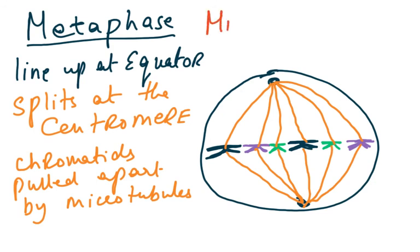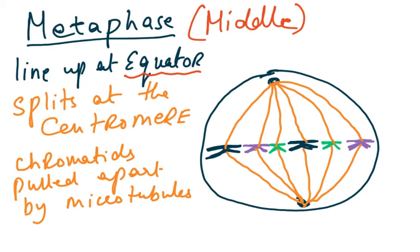In metaphase — M for middle, but use the word equator — the chromosomes line up at the equator. The centrosomes have reached the poles. The chromatids are going to be pulled apart by the microtubules, which split at the centromere.